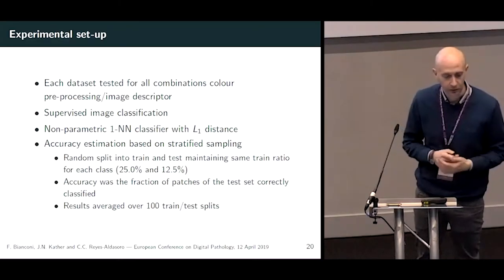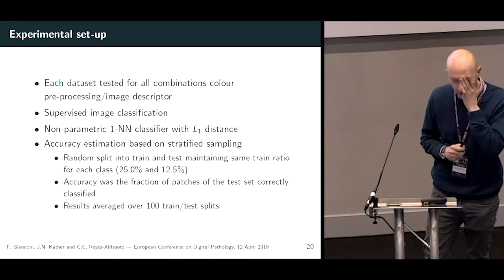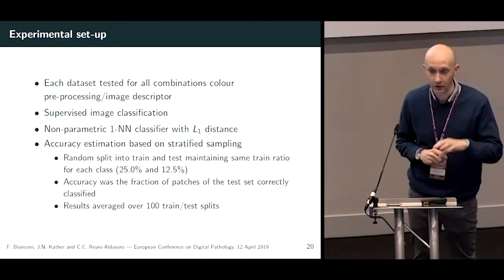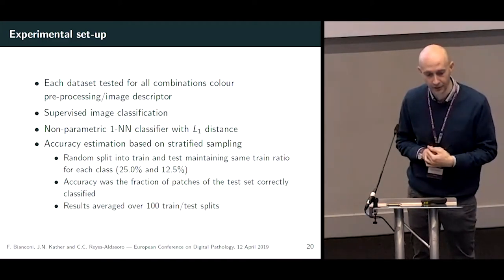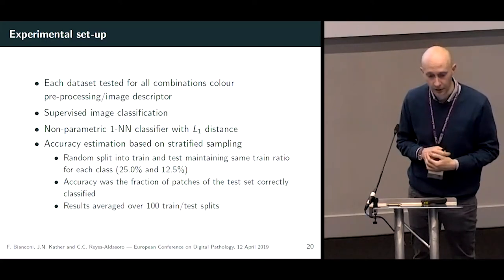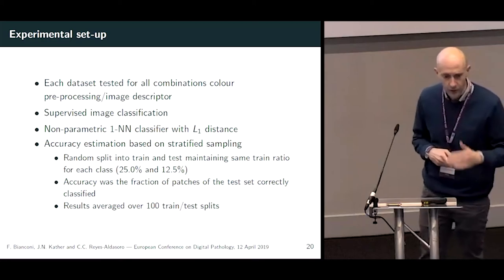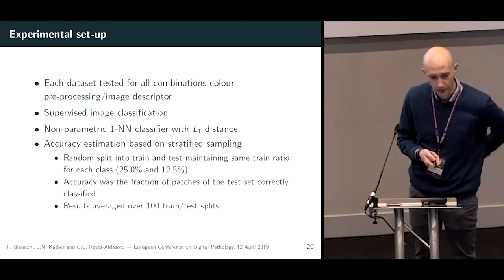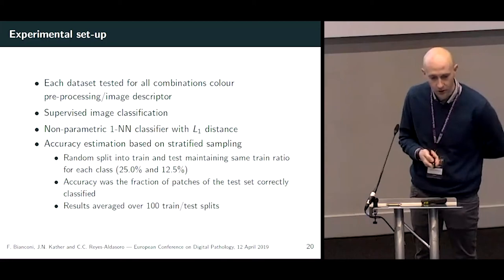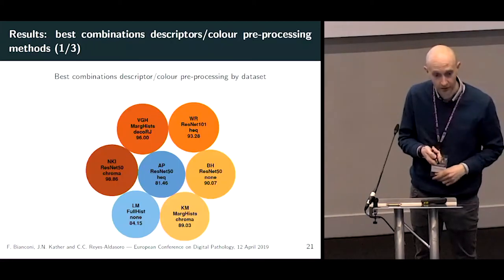In the experimental part, we tested the accuracy of each combination of color pre-processing and image descriptor for each of the datasets, using a very simple classifier with 1-nearest-neighbor stratified sampling with a train ratio of 25% and test ratio of 12.5%.